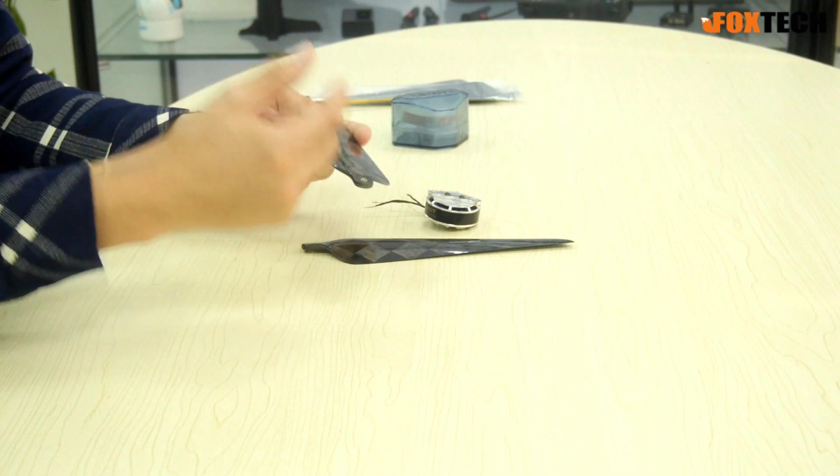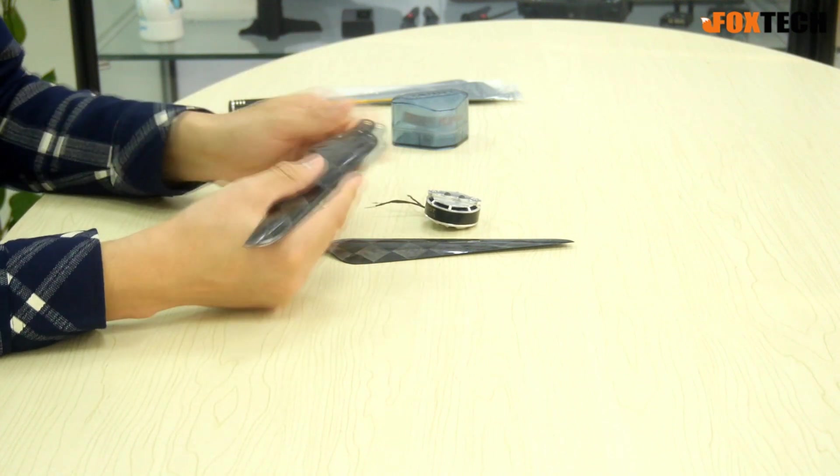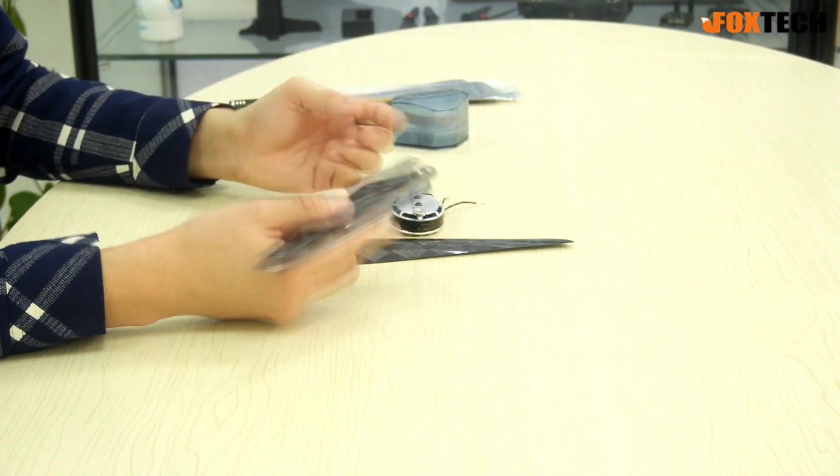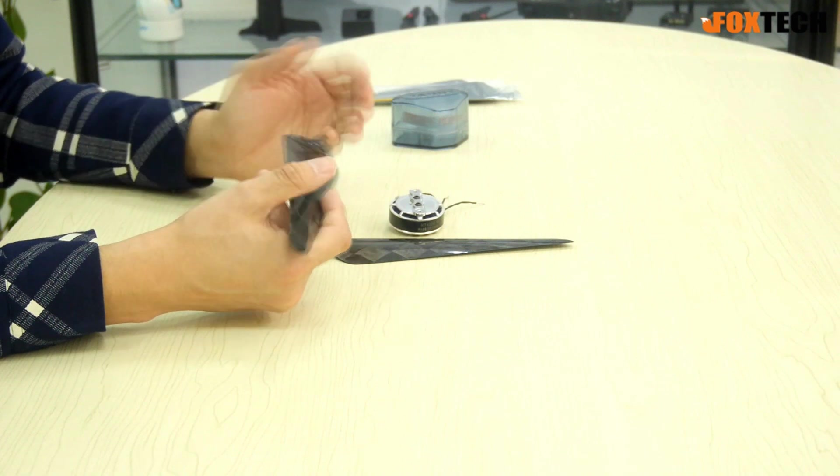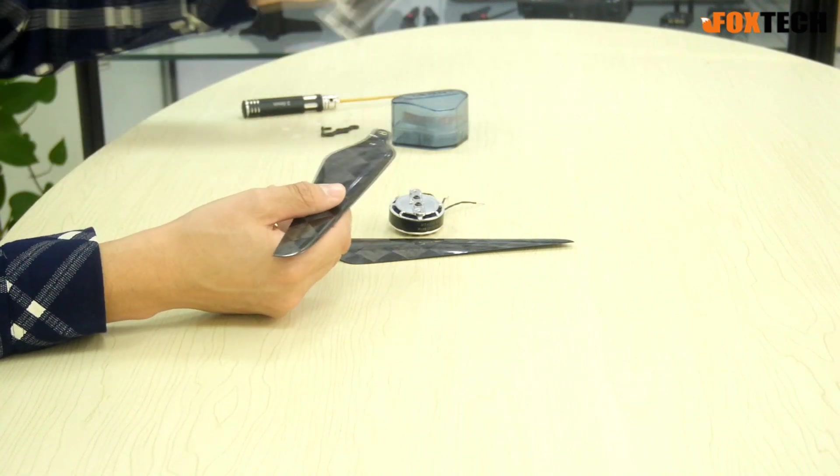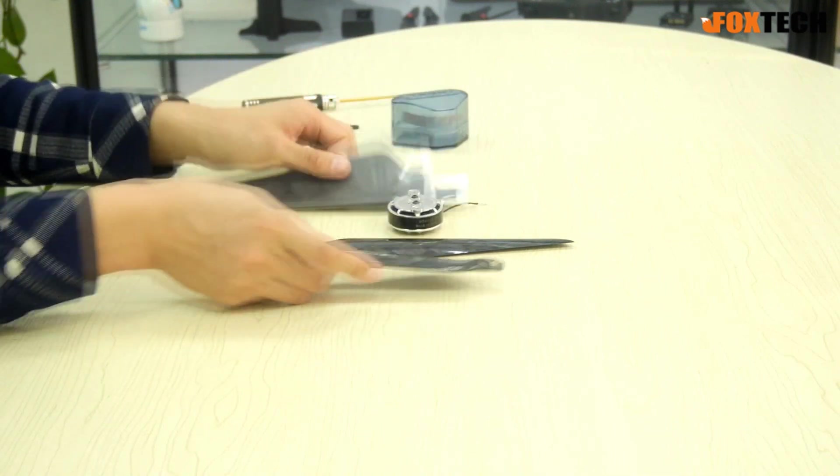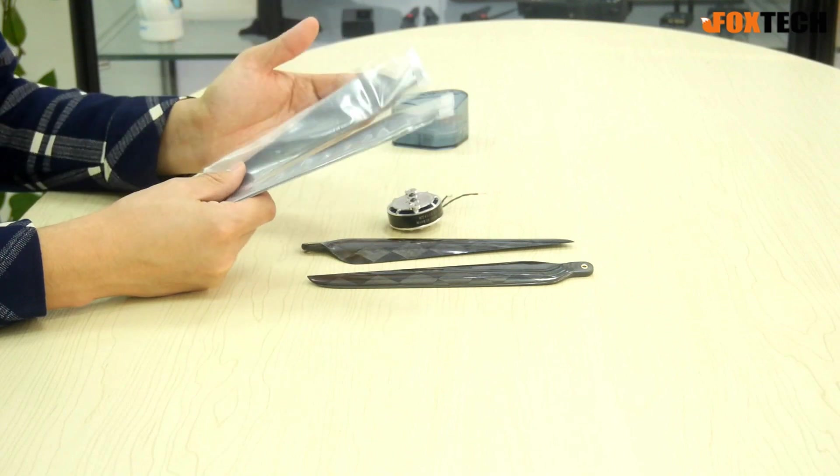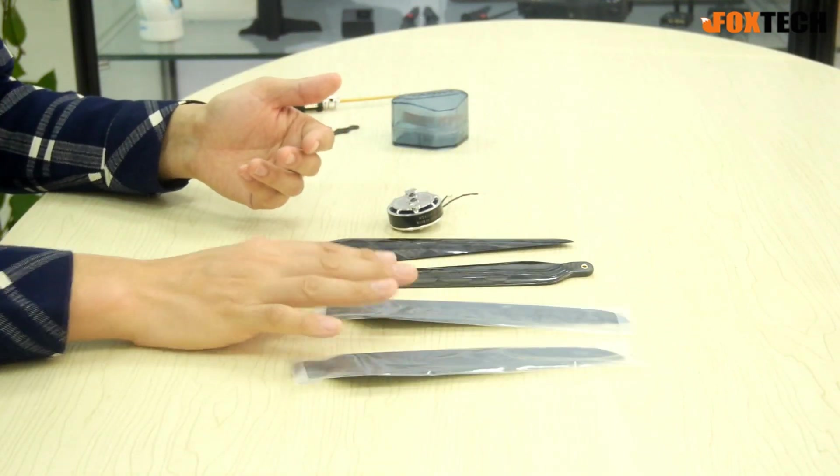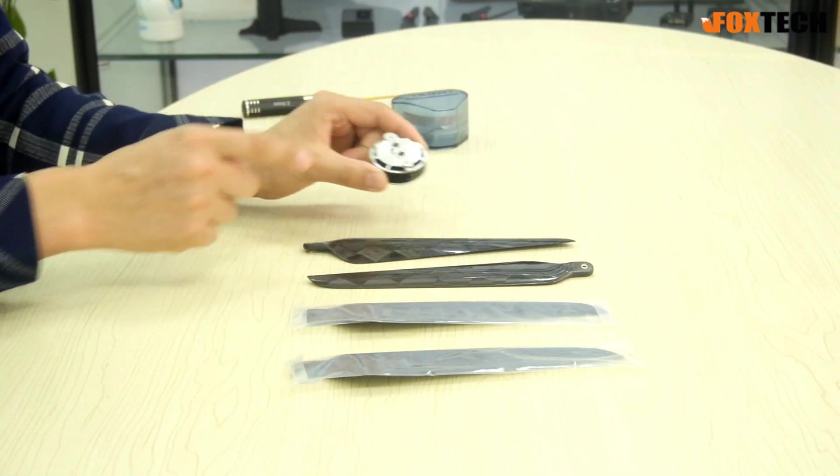Each package of the propeller includes two, actually one pair and four blades, so you can use the propeller on two of the motors to make counterclockwise and clockwise.